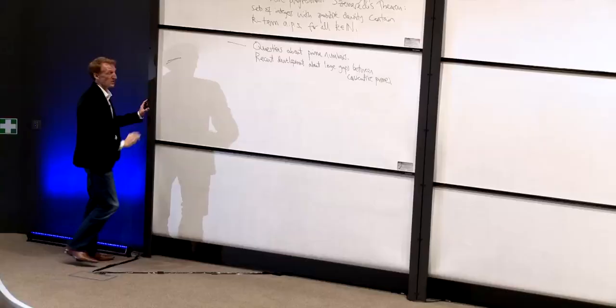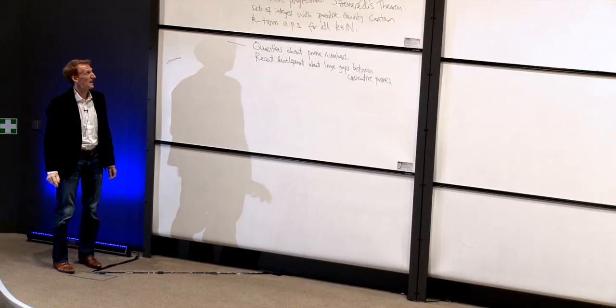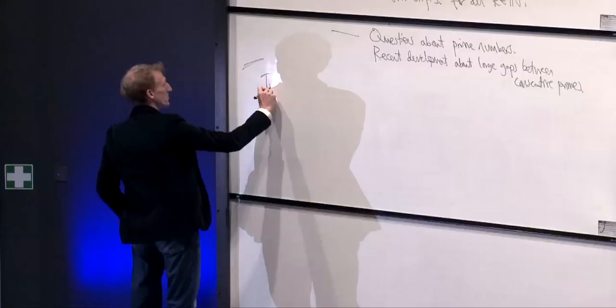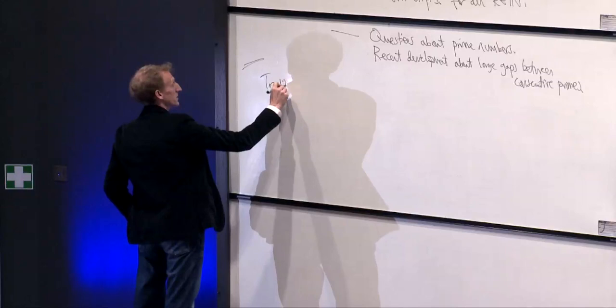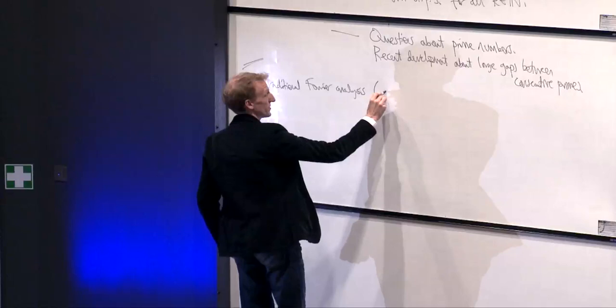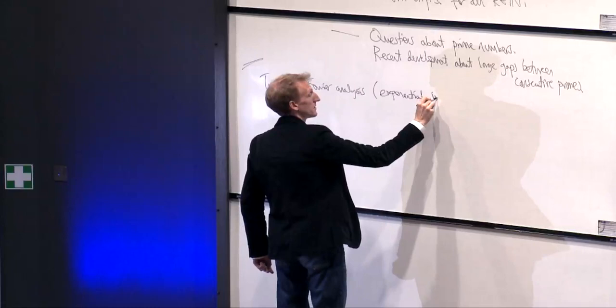It's been understood for a long time that traditional Fourier analysis is a tool well equipped for studying essentially a single linear equation in a set. Traditional Fourier analysis — called different things by different people — is called the method of exponential sums or the Hardy-Littlewood method.